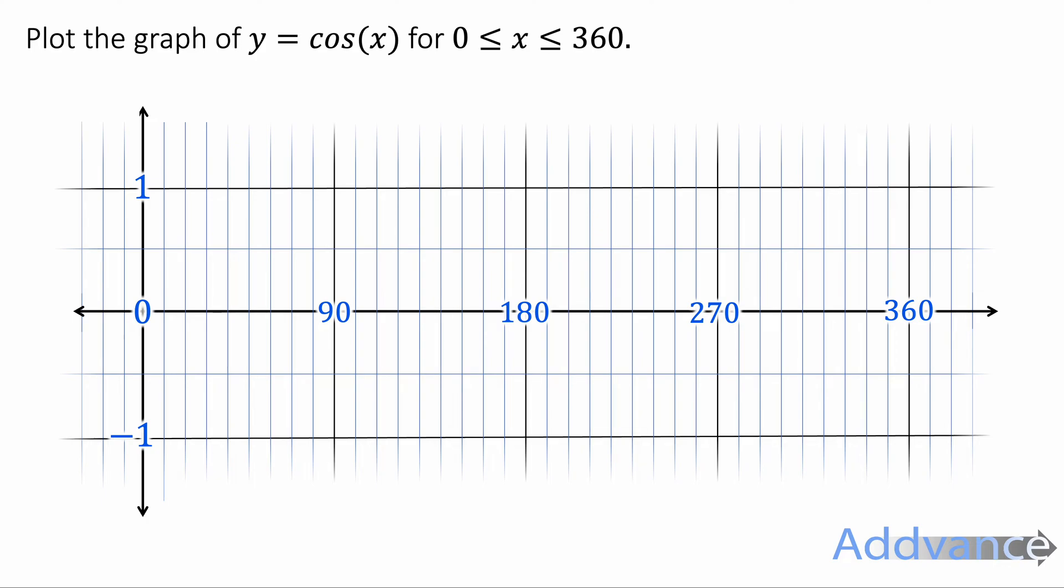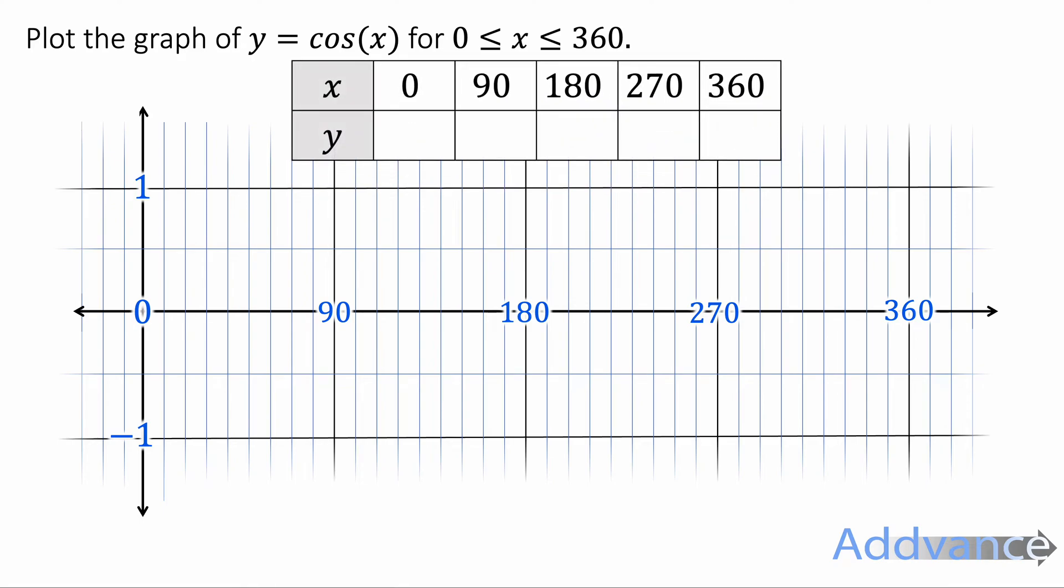Now I'm going to do y equals cos of x between 0 and 360. And again I'm going to use a table of values. And for the interest of time I've just filled out that table of values here using my calculator, exactly the same as before. I plot those coordinates and I connect it with a nice smooth curve. This is what the cos of x graph looks like.